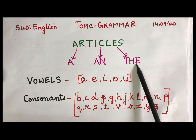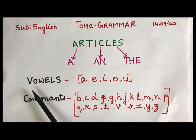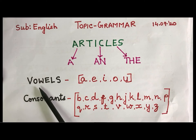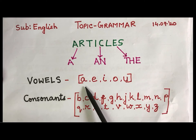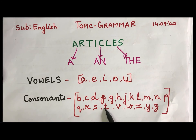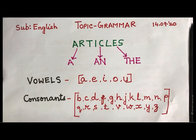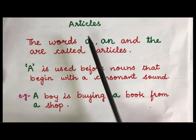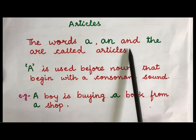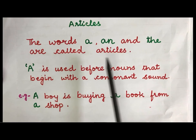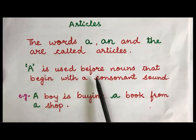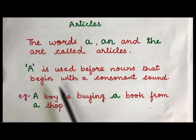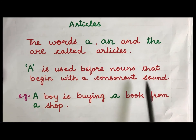A, an, and the are known as the articles. Now children, you are already knowing what are vowels and consonants. A, E, I, O, U are the vowels and the rest of the letters in the alphabet are known as consonants. Now the words a, an, and the are called articles. A is used before nouns that begin with a consonant sound.